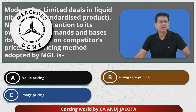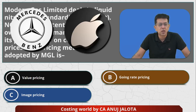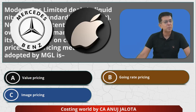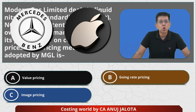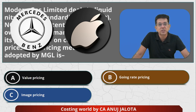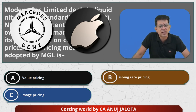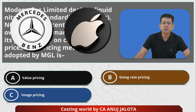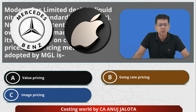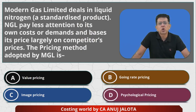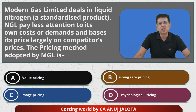Option C is image pricing, whose full form is brand image pricing. Companies like Mercedes and Apple have very premium products, so they always maintain premium pricing on everything they launch. For example, Apple's AirPods Max are available for around 50,000 rupees. That is image pricing or brand image pricing.